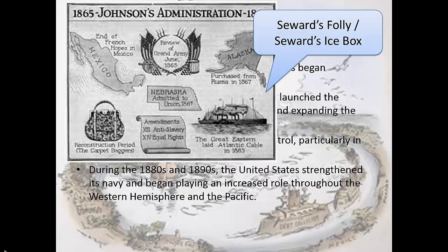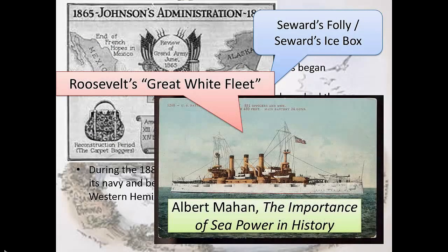U.S. policy is going to emphasize a lot of economic control, and going along with that will be their purchase of the Great White Fleet — the building up of 16 naval ships, all painted gleaming white — that we see as an important part of maintaining an overseas empire. We're trying to strengthen our navy and play an increasing role throughout the Western Hemisphere, and it all kind of stems back to Albert Mahan, who publishes a book called The Importance of Sea Power in History.